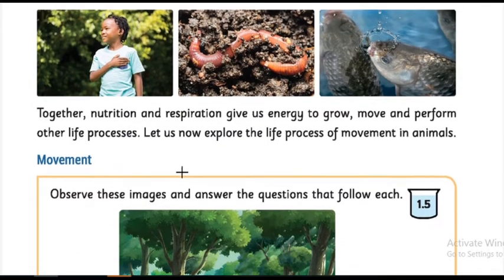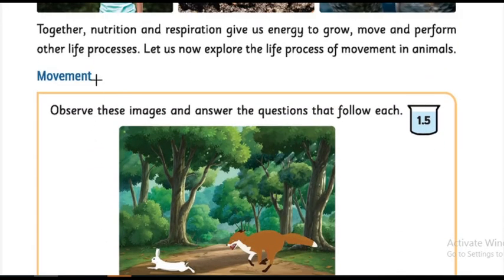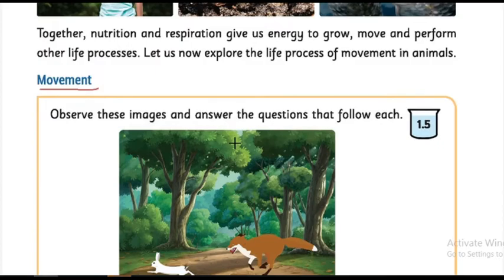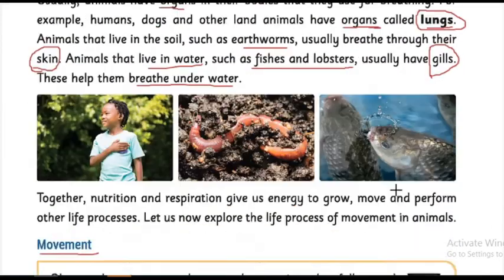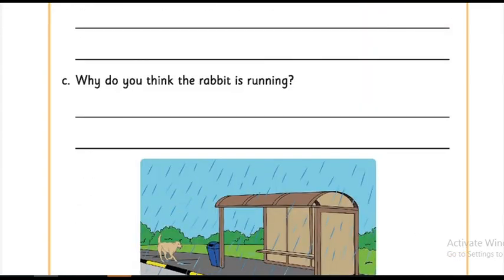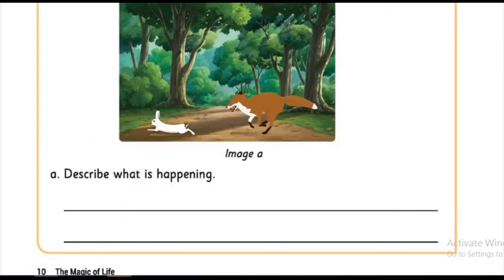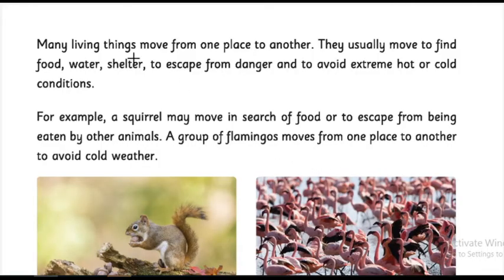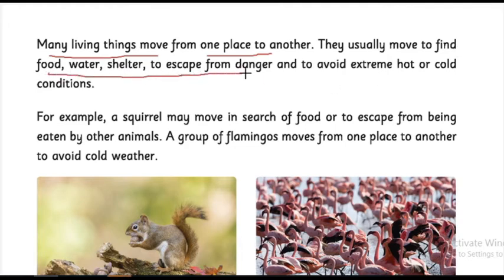The second important character of a living thing is movement. We move from place to place — that is called movement. A chair cannot move from place to place unless we move it, but living things can move on their own. Many living things move from one place to another to find food, water, and shelter, to escape from danger, and to avoid extreme hot or cold conditions.